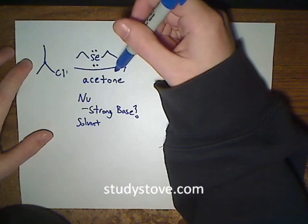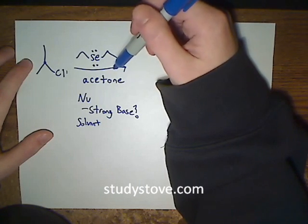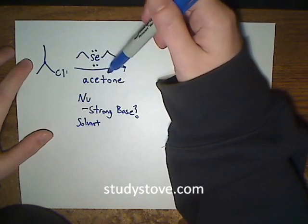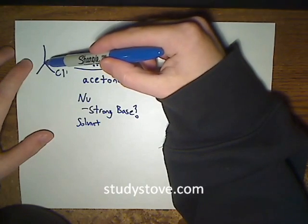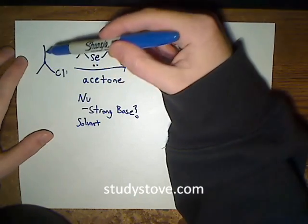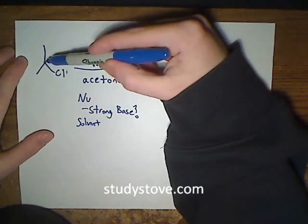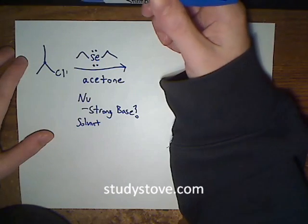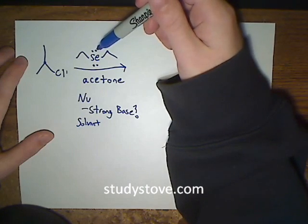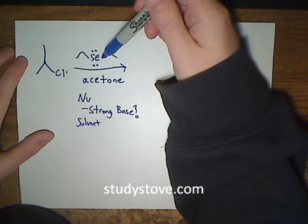We're basically stuck between SN1 and SN2. We know this reaction can go SN1 because it's a secondary carbon that can form a secondary carbocation. It can also go SN2 because there isn't enough steric hindrance to block a backside attack from our good nucleophile, the selenide.